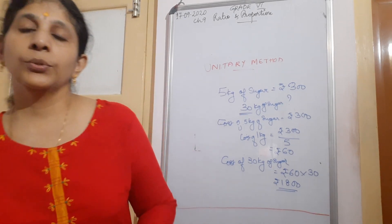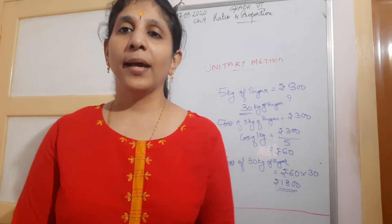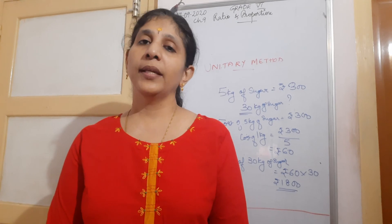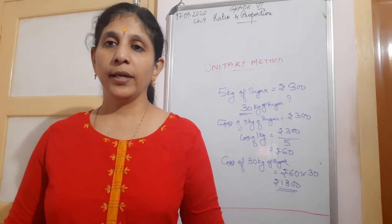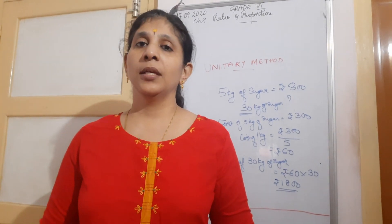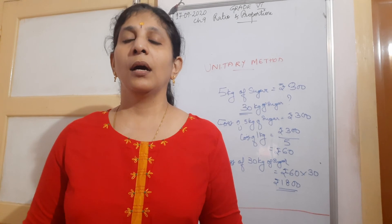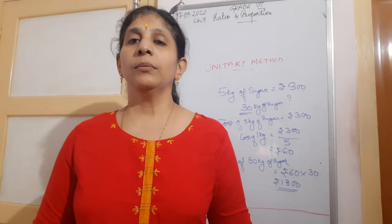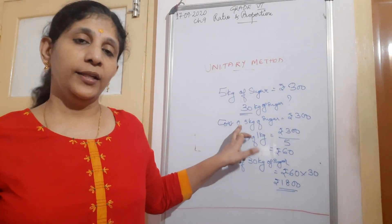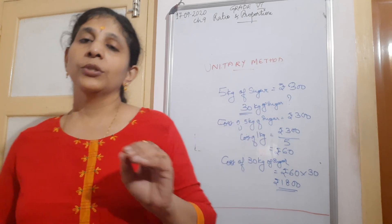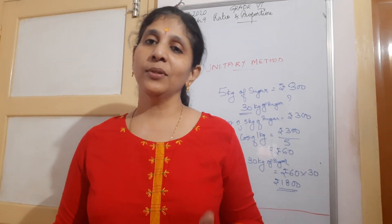Today you dealt with a new chapter - ratio and proportion. Ratio is comparing two quantities having the same unit, and ratio doesn't have any unit. You found out equivalent ratios, which are like equivalent fractions - multiply or divide both sides by the same number. Equivalent ratios are called proportion. The last topic was unitary method - finding the value of one quantity, then finding the value for many quantities. Tomorrow you will be doing the exercises. Revise well. Thank you, bye-bye.